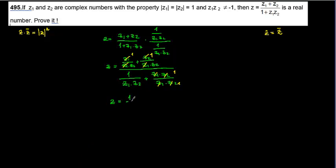After simplifying, the numerator becomes 1 over z2 plus 1 over z1. I made a mistake earlier — for z2 over z1·z2, I need to cancel z2, giving 1 over z1. So the expression becomes: 1 over z2 plus 1 over z1, all over 1 over z1·z2 plus 1.